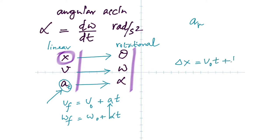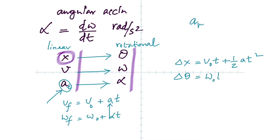And then you would have the next equation — remember we used to call it the king? What comes in place of x or delta x? Delta theta. So: delta theta equals omega-naught times t plus one-half alpha t squared.